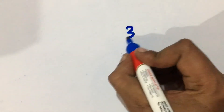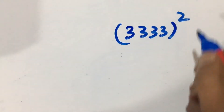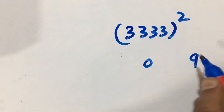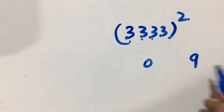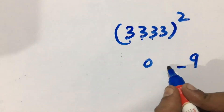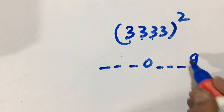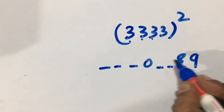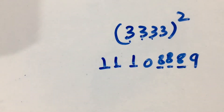Similarly we can do it for a four-digit number: 3333 squared. We know it's 09. Count the digits: one, two, three — so again one, two, three. Nine minus one is 8, eight minus one is 8, eight minus one is 8, zero minus one becomes 1, 1, 1. See how quickly we can solve this.